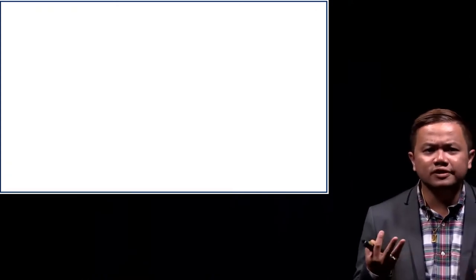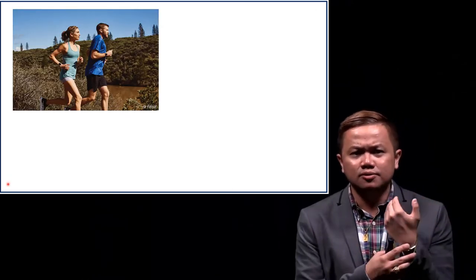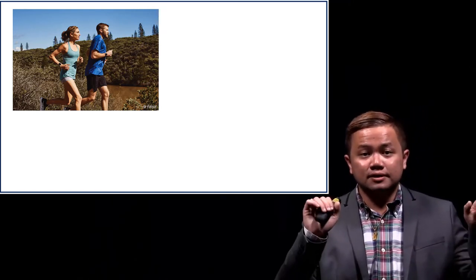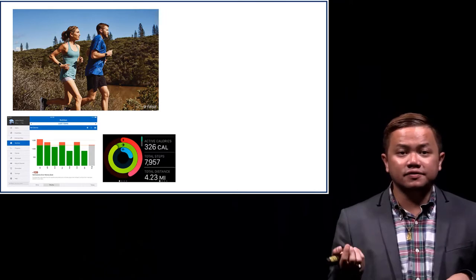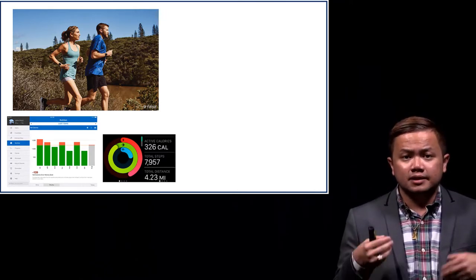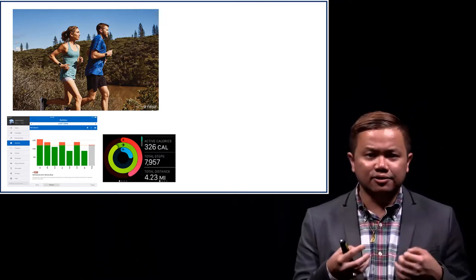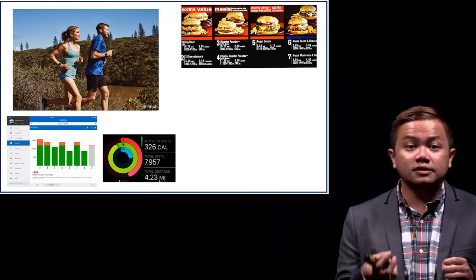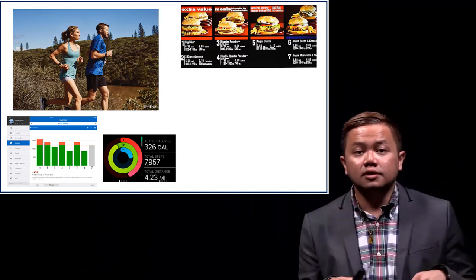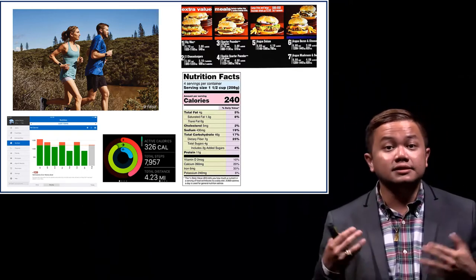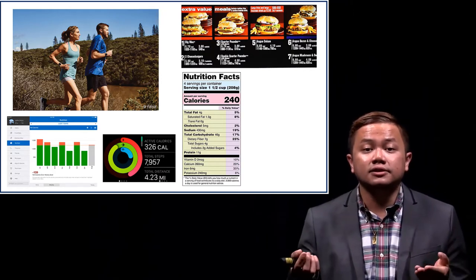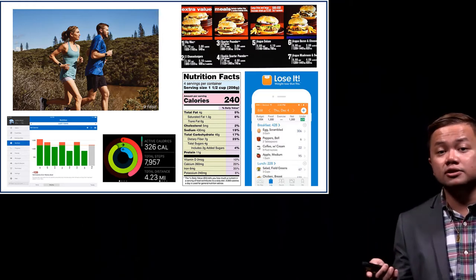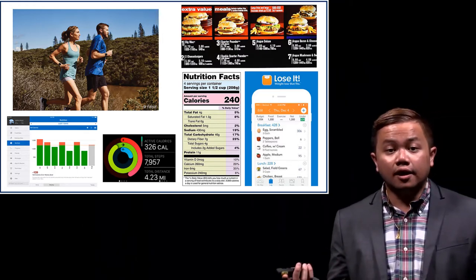Most of us have Fitbits or Apple Watches, which do an amazing job of tracking how many calories we burn exercising. After exercising, I would like to reward myself with some good food to eat. But when we go to a fast food restaurant, we see calories on menu boards, and we see them on food labels as well. Today we're going to learn how these calories are actually measured.